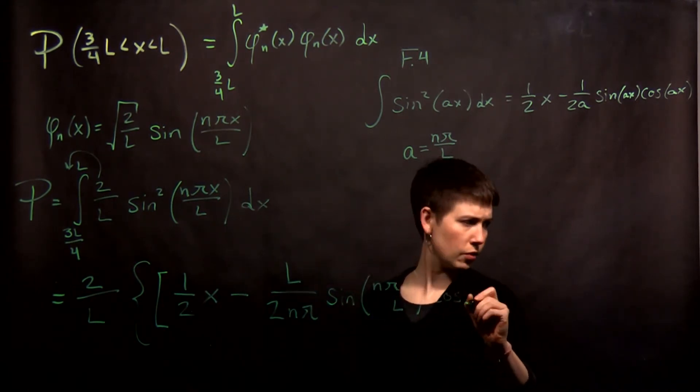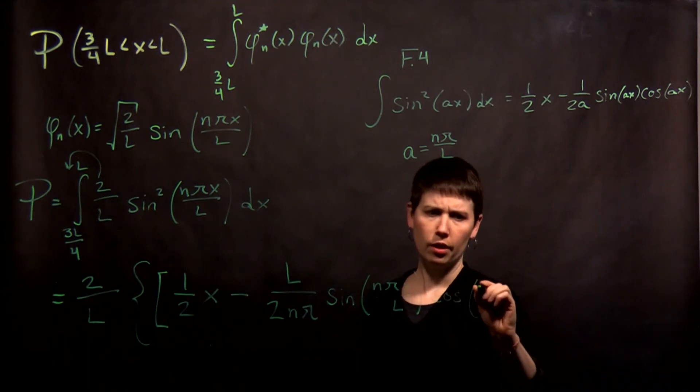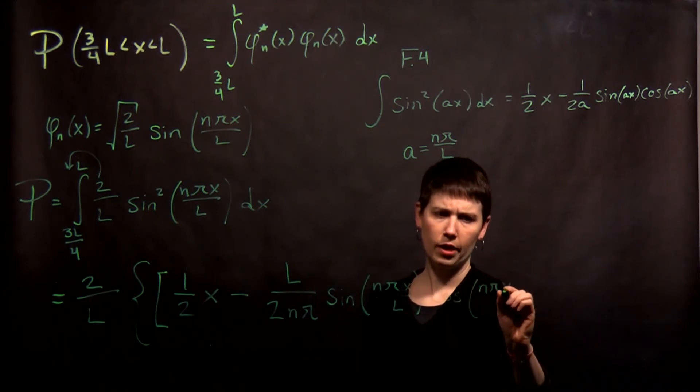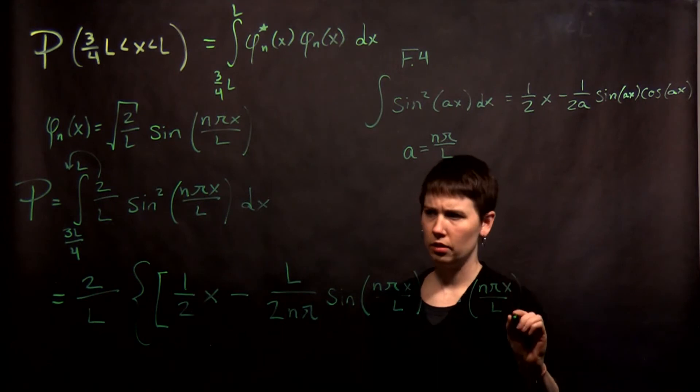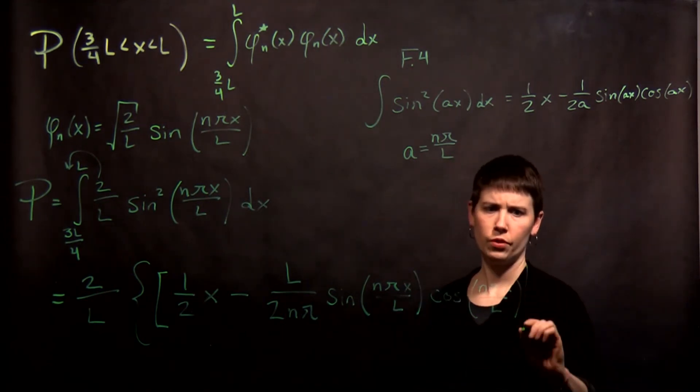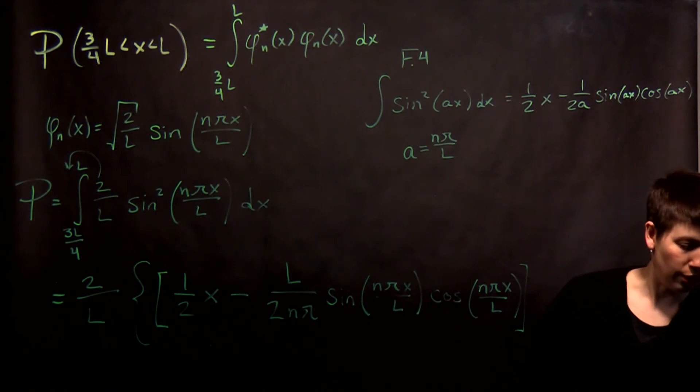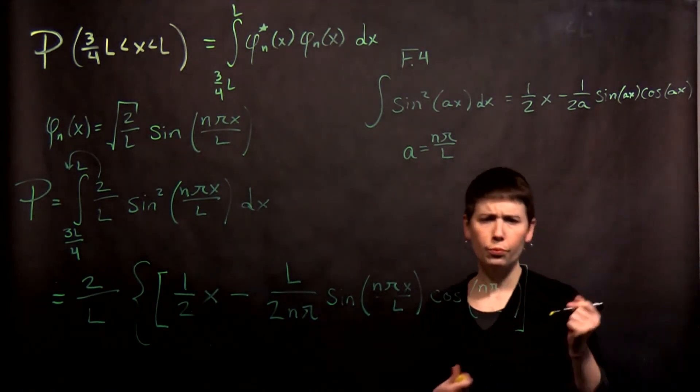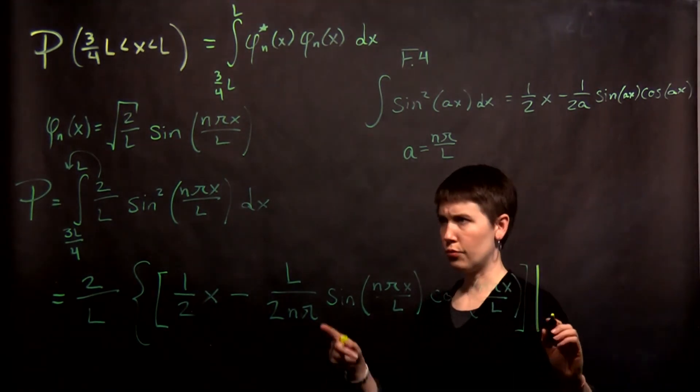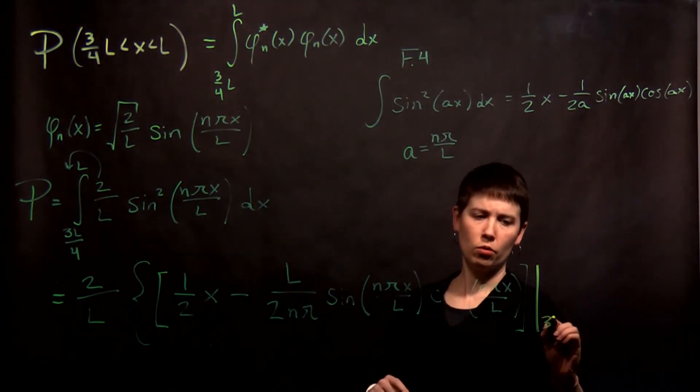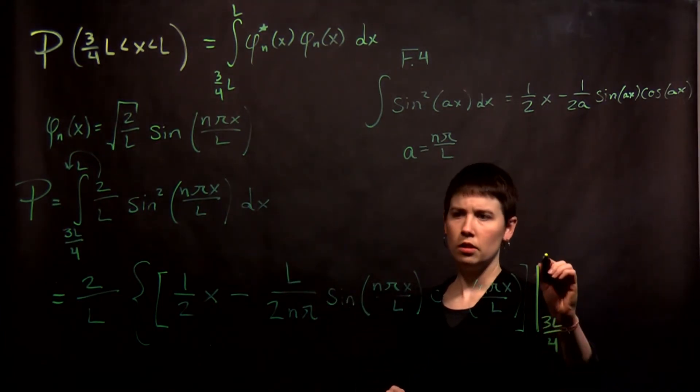sine of n pi x over l, cosine of n pi x over l. But now remember that you have limits of integration to worry about. Don't forget those. So that goes from 3 quarters l to l.